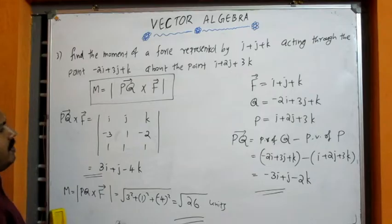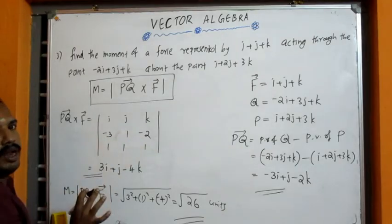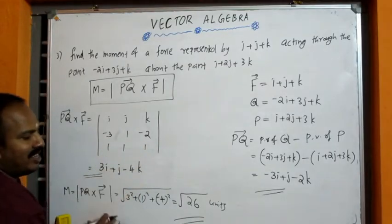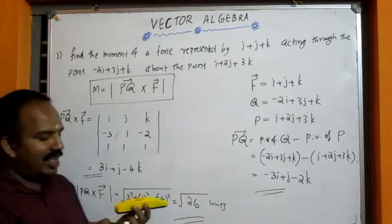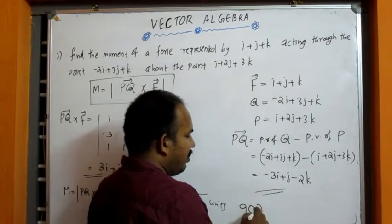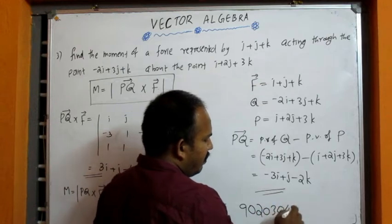Now we have completed one of these. It is important to use the formula PQ cross F. The answer is 9020304849.